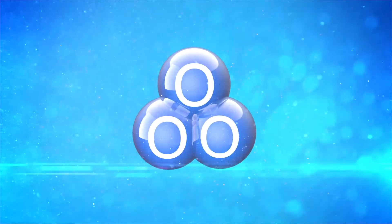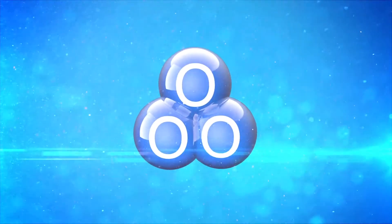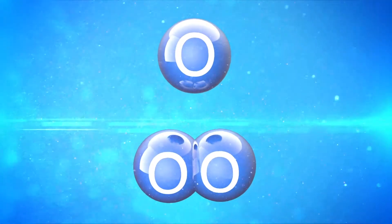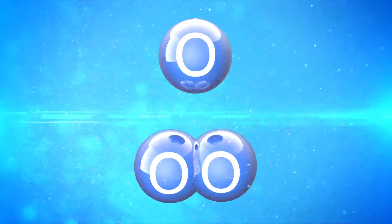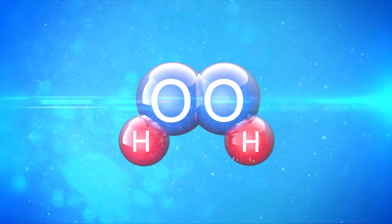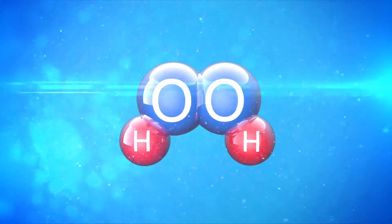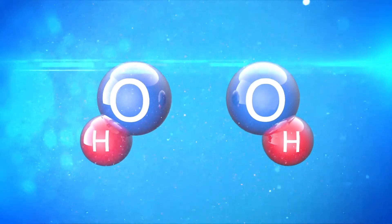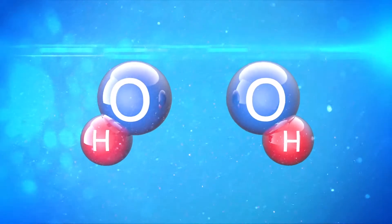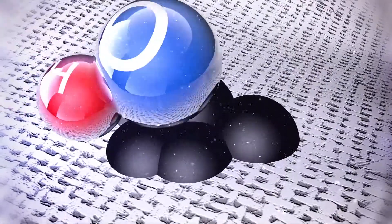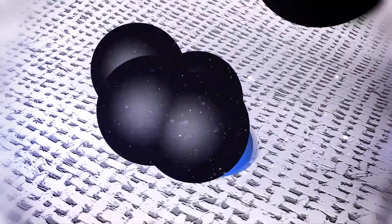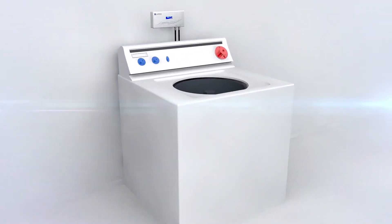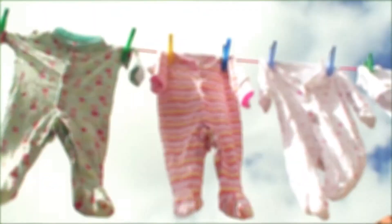Ozone contains 3O particles. The negative charge breaks this into oxygen singlets, O, and molecular oxygen, 2O. Hydrogen peroxide contains 2H and 2O particles. The negative charge breaks this into an HO particle called hydroxyl. Hydroxyls are the safest and second-best cleaning agents known to man, while chlorine barely compares at 16th on the list.